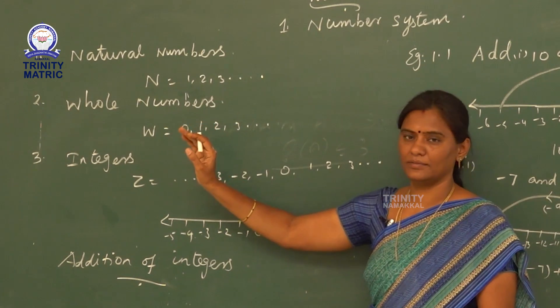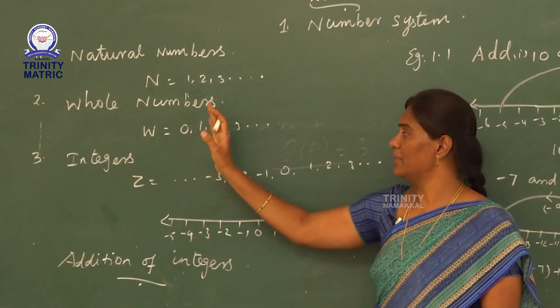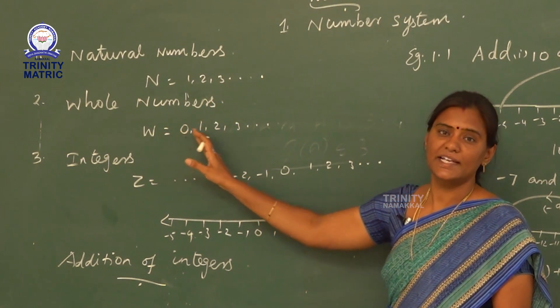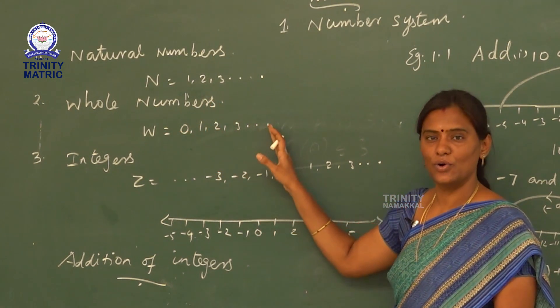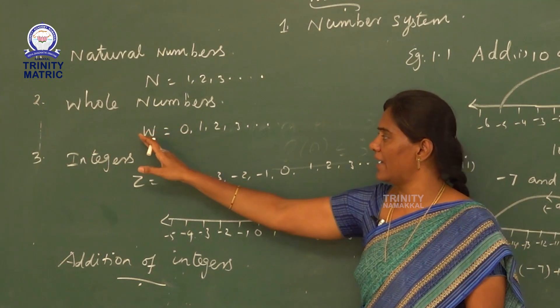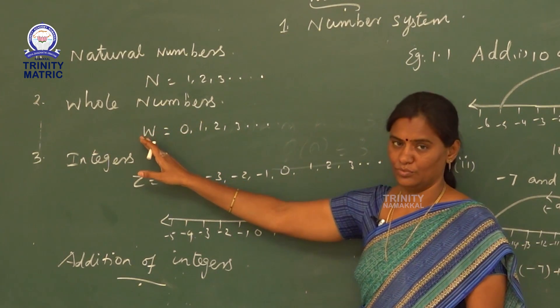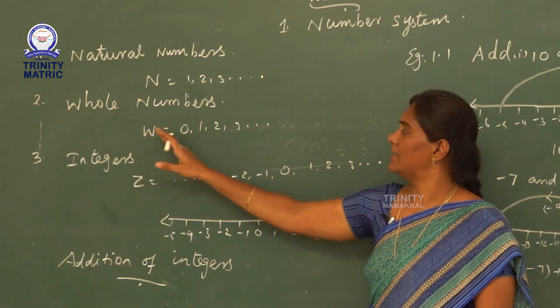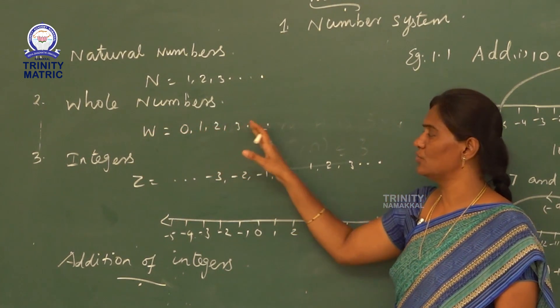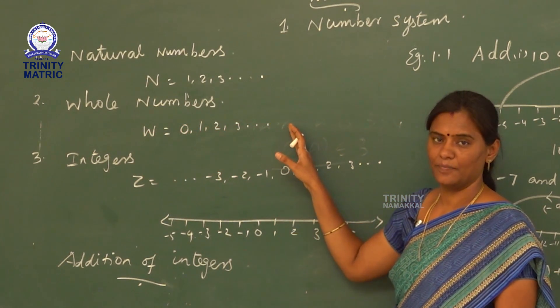Next, whole number. A number starting from 0 is known as whole number. It is denoted by W. W is 0, 1, 2, 3, etc.